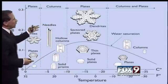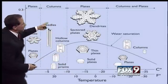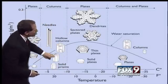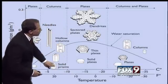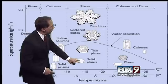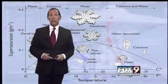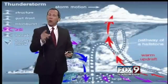There are all different kinds of shapes as well — there's needles, hollow columns, solid prisms, solid plates. But these are the popular ones, the dendrites, that really pile up.